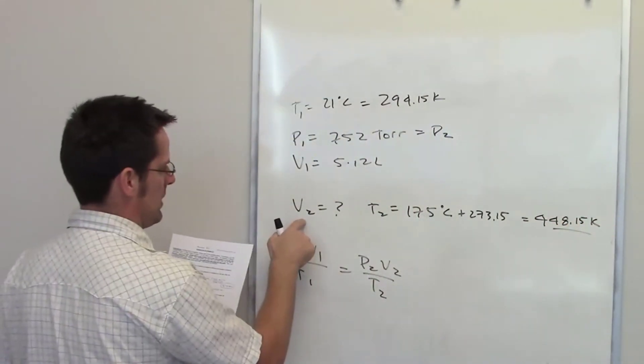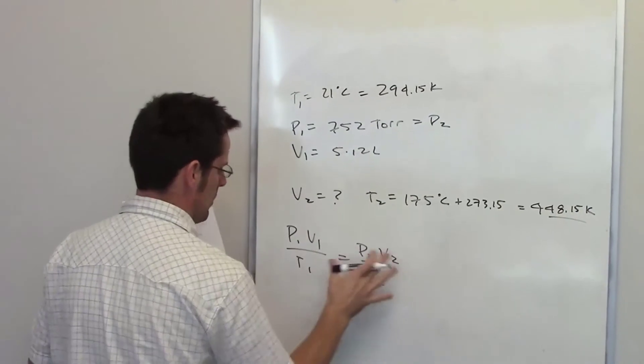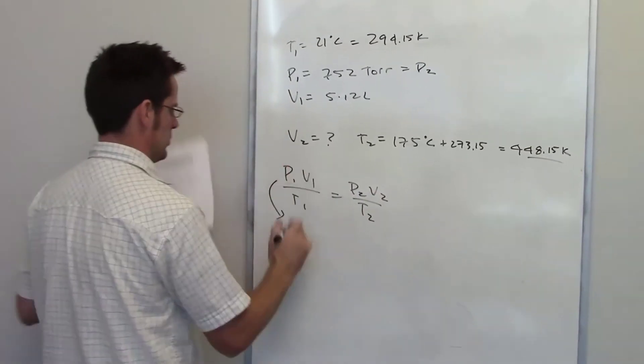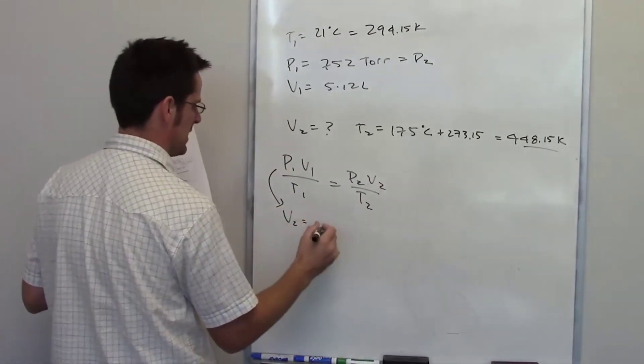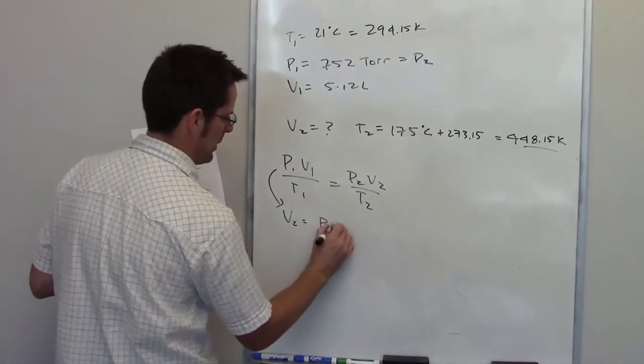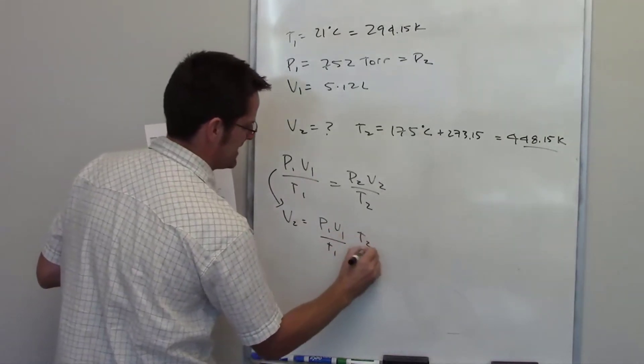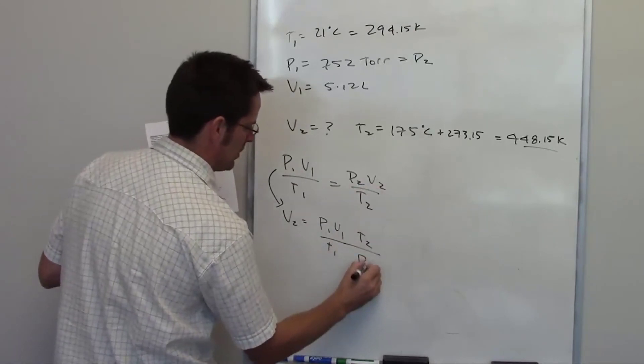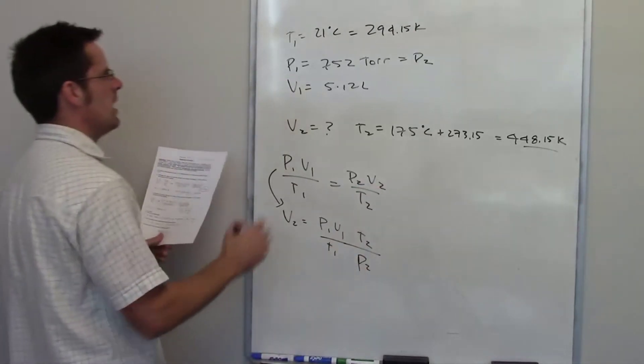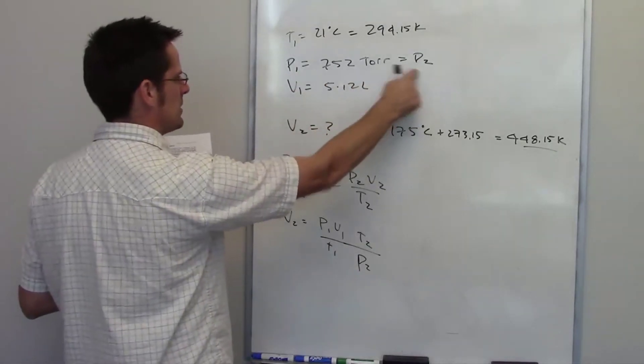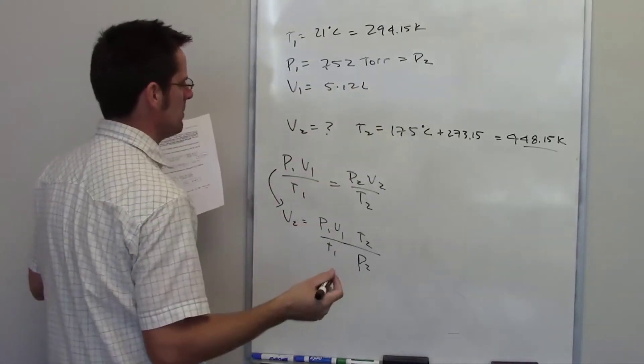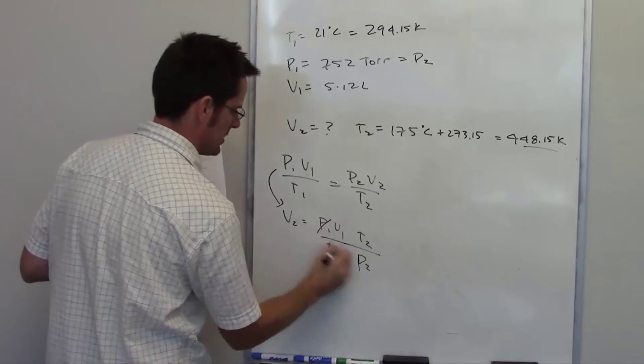Okay, so the mystery that we're trying to figure out is V2. So what I want to do is use algebra to get V2 on one side and everything else on the other. You'll notice that V2 algebraically equals P1 V1 divided by T1 multiplied by T2 divided by P2. If we look back at this, P1 and P2 are equal, so I can jump the gun and just cross these guys out.